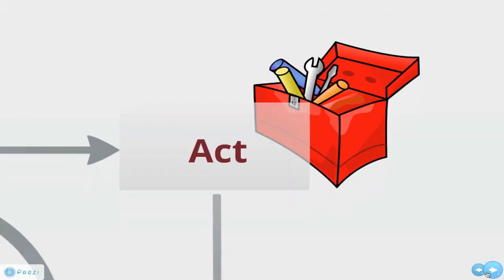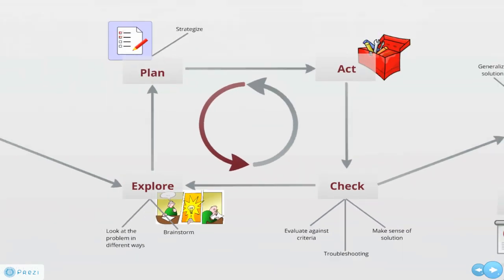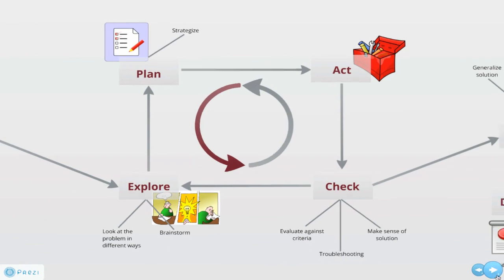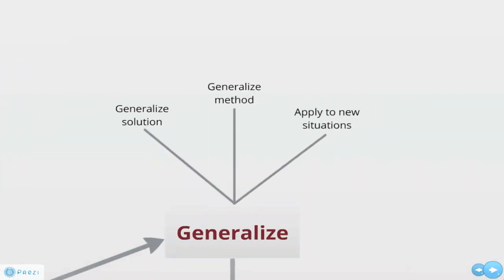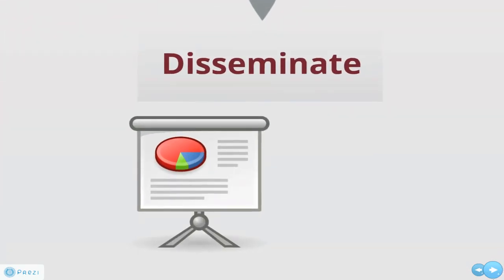Once you have a solution, you need to check it. Does it make sense? Does it meet the criteria? Where does it fall short? Is any troubleshooting required? If the solution isn't satisfactory, it might be necessary to explore some more and create a new plan. Once you have your final solution, what have you learned that can be generalized to other contexts?